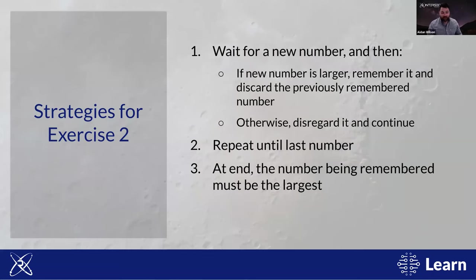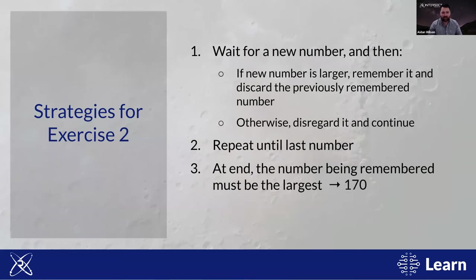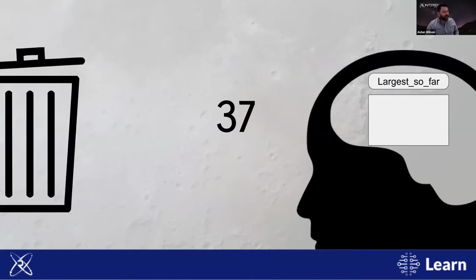How did you solve it this time? You likely waited patiently for a new number to pop up, and when it did, if it was larger than the previous number you remembered it and discarded the previous one; if not, you disregarded it and repeated until no more numbers were shown. At the end, the number you were remembering must deductively be the largest — and it was 170. By showing numbers one at a time you're forced to process them one at a time, which is close to how computers think: serially processing one piece of information and moving on.